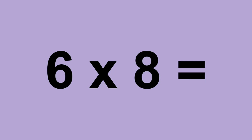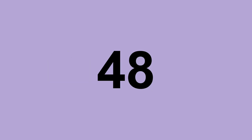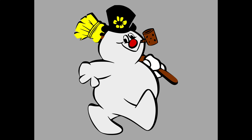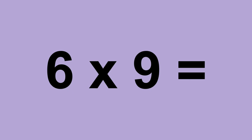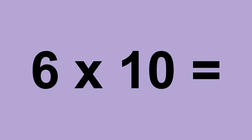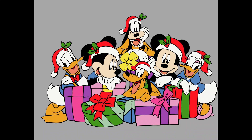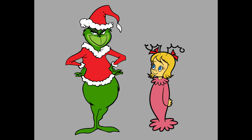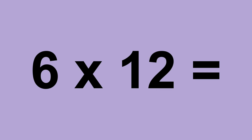Six times eight equals forty-eight. Six times nine equals fifty-four. Six times ten equals sixty. Six times eleven equals sixty-six. Six times twelve equals seventy-two.